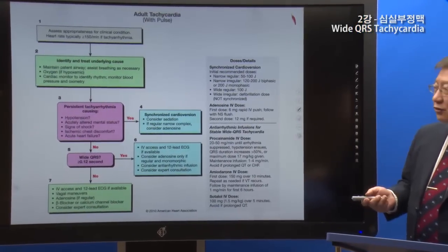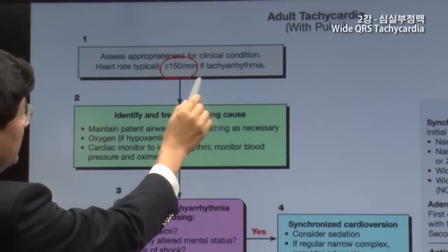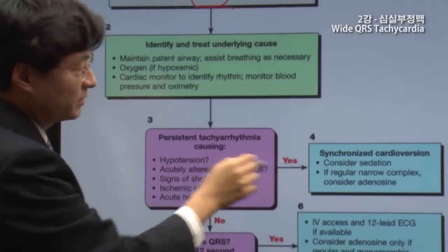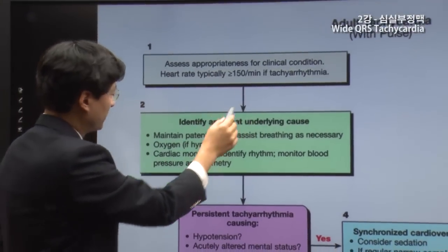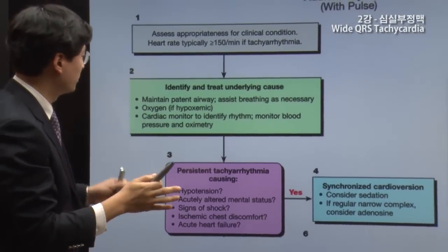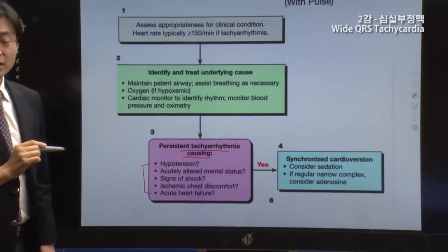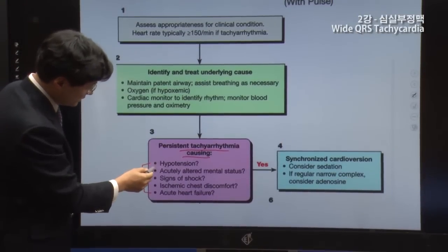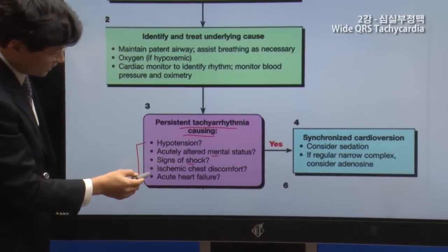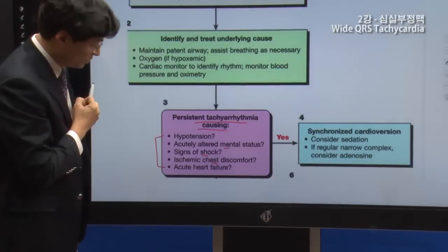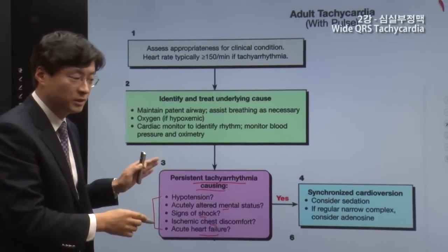For adult tachycardia with heart rate greater than 150 beats per minute, assess whether the QRS is wide or narrow. Then evaluate the five unstable criteria: hypotension, altered mental status, signs of shock, chest discomfort, and acute heart failure. If any of these are present, this is unstable tachycardia requiring immediate intervention.